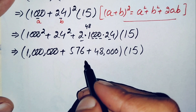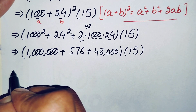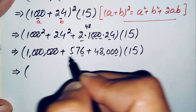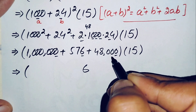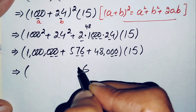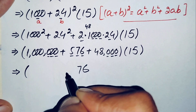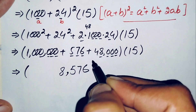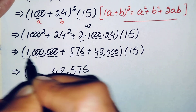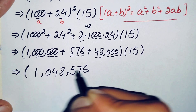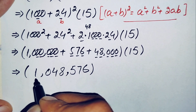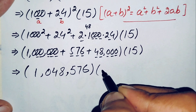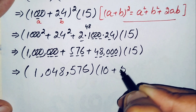Adding these three numbers: starting from the ones position, 0 plus 6 plus 0 is 6; 0 plus 7 plus 0 is 7; 0 plus 5 plus 0 is 5; 8 plus 0 is 8; 4 plus 0 is 4; and 1 from the millions. The addition of these three numbers gives 1,048,576. We can write 15 as 10 plus 5.